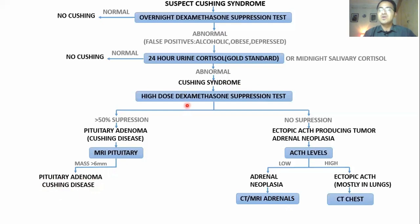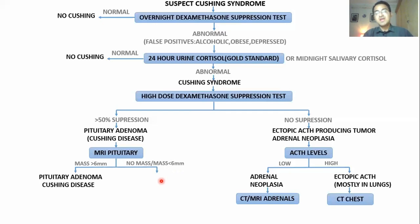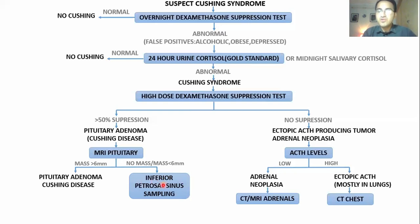When you do not know the source of excess cortisol or the cause is outside the pituitary, it is called Cushing syndrome. Sometimes you find no mass on MRI, or the mass is less than 6 mm, which is considered insignificant. In that case, you go for inferior petrosal sinus sampling.